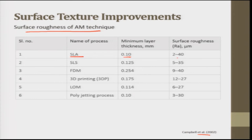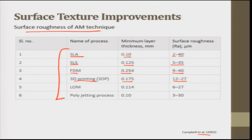Typical surface roughnesses from research show that for SLA, minimum layer thickness is 0.1 mm and roughness varies from 2 to 40 micrometers. For selective laser sintering, minimum layer thickness is 0.125 mm and roughness is 5 to 35 micrometers. For FDM, minimum layer thickness is 0.254 mm and surface roughness is 9 to 40 micrometers. For 3D printing, minimum thickness is 0.175 mm and surface roughness is 12 to 27 micrometers. The minimum thickness and minimum surface roughness achievable are found in SLA and polyjet processes.